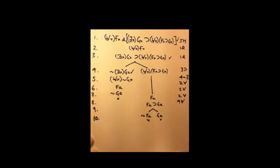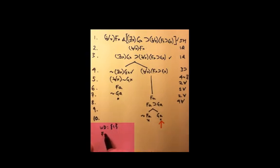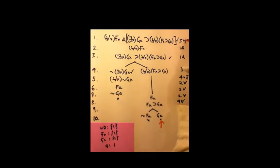We can use either open branch to create an interpretation on which the given sentence at the top is true. Using the right-hand branch, our interpretation requires only one element in the universe of discourse. The predicate f(x) has that element in its extension, and so does the predicate g(x). And 'a' is just that one element. This specification — the extensions of the predicates, the universe of discourse, and the reference of the constants — is an interpretation on which the original sentence is true.